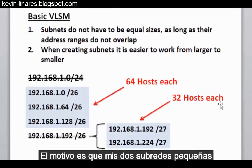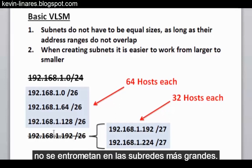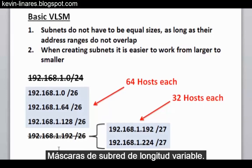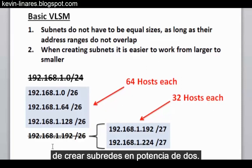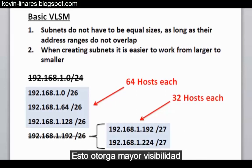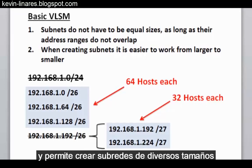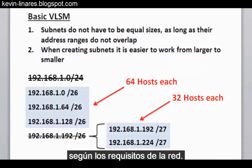The reason I can do this is because my two smaller subnets do not intrude into the larger subnets — this is variable length subnet masks. It has also allowed me to create five subnets, thus escaping the equal sized subnet limitation of creating subnets in powers of two. This gives me greater flexibility and allows me to create subnets of different sizes based on the requirements of my network.